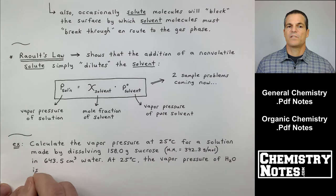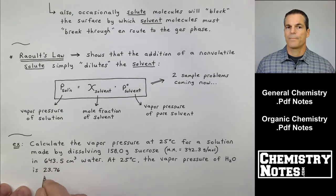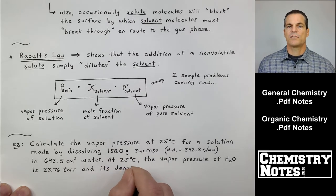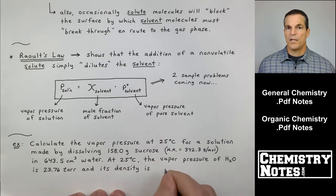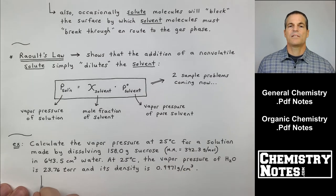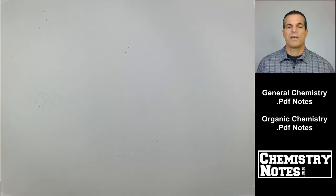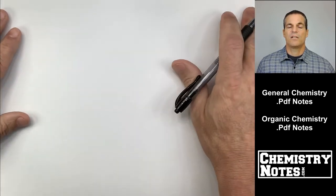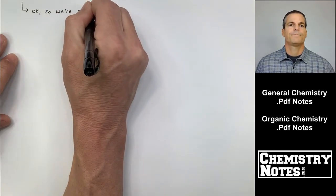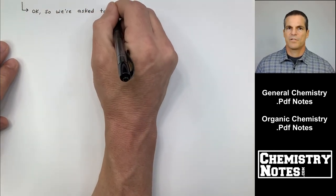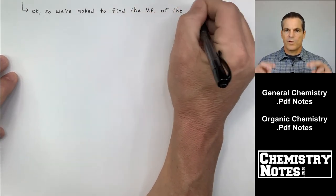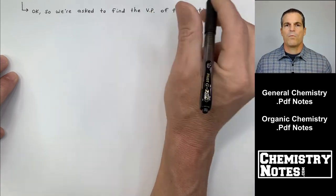Calculate the vapor pressure at 25 degrees Celsius for a solution that's made by dissolving 158 grams of sucrose in 643.5 centimeters cubed of water. And then they're going to give us some information. At 25 degrees Celsius, the vapor pressure of H2O, pure solvent, is 23.76 torr. And its density is that number that they gave us. So we will use that density as we need to to go between grams, mass, and volume. So how are we going to approach this problem? What are we going to do? There's a lot of numbers in here. It's not like the old days when you could just do dimensional analysis. We have to kind of figure out what we're going to do here.